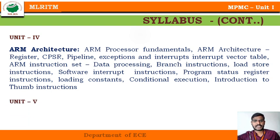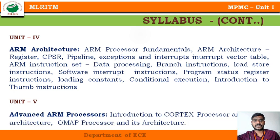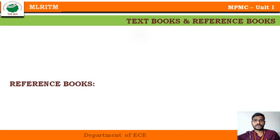Unit 5 covers OMAP applications — an architecture used for mobile applications — and different types of Cortex processors. These help students analyze real-time processes and choose different high-end processors or controllers.